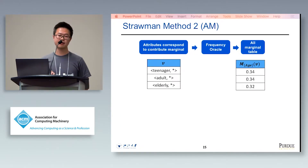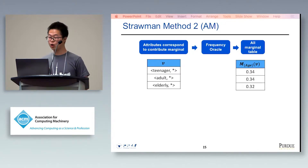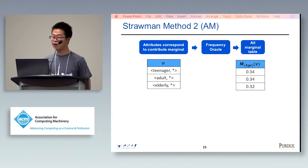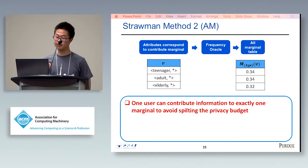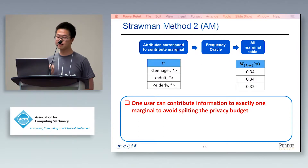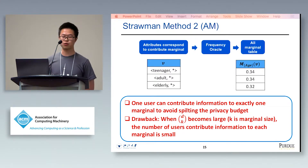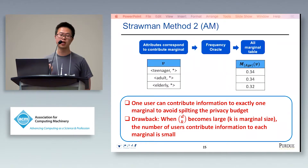To mitigate noise, another method is to construct all k-way marginals directly. There are two alternatives: one is to split the privacy budget so each person contributes information to all marginals, and another is to split the users so each user contributes information to exactly one marginal. In practice, splitting users is much better than splitting the privacy budget, because reporting under a low privacy budget is very noisy. However, this method requires splitting users into D-choose-k groups, and when D-choose-k becomes large, the number of users contributing information to each marginal is small, making it vulnerable to noise.